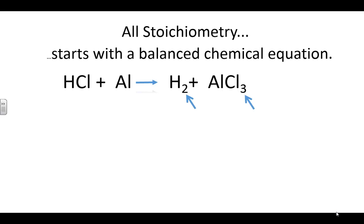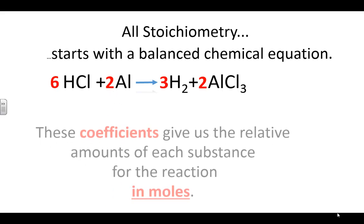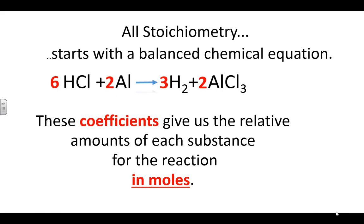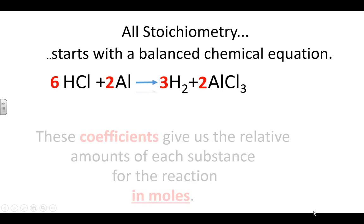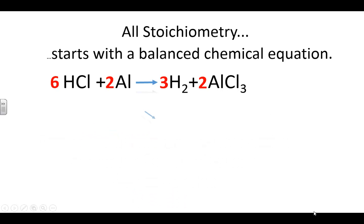You can see that hydrogen and chlorine are here in multiples of 2 and 3, but a 1-to-1 ratio on the left. 2 and 3 both going to 6, so we can fix that with a coefficient of 6 there. 3 in front of hydrogen and 2 in front of aluminum chloride, so we need to put a 2 in front of aluminum, and we have our balanced equation. Those coefficients give us the relative amounts of each substance for the reaction in moles.